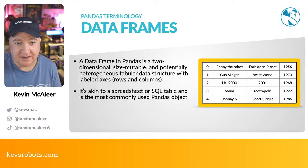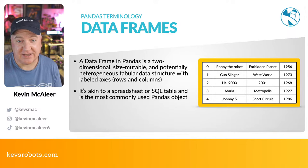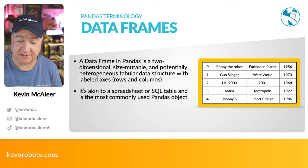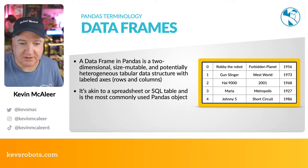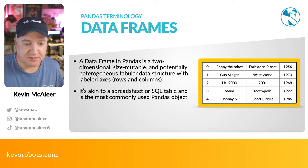One of the main things we need to look at in pandas is data frames. A data frame in pandas is a two-dimensional, size-mutable, potentially heterogeneous tabular data structure with labeled axes. Once you make a data frame you can't change the size of it directly — you add data by creating a new copy with new columns or rows added. The heterogeneous tabular data structure means we can have different types of data within the cells.